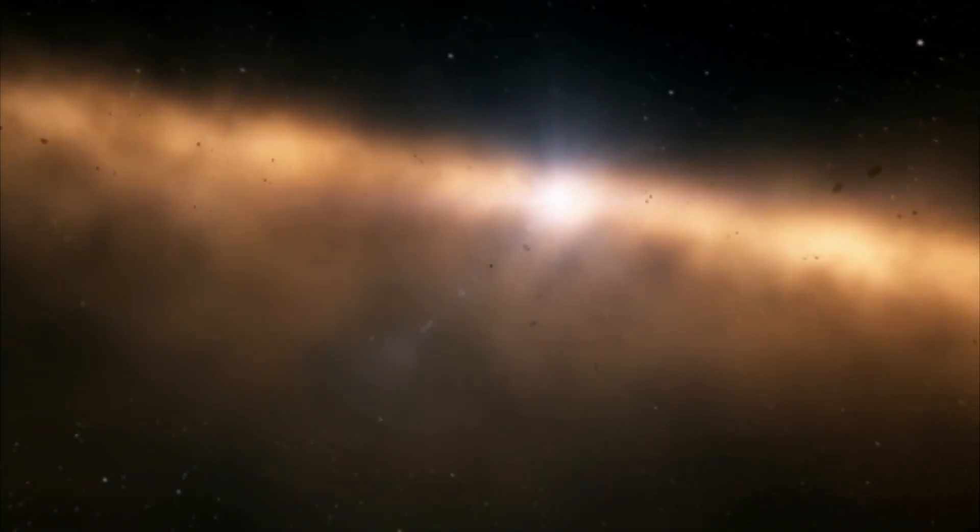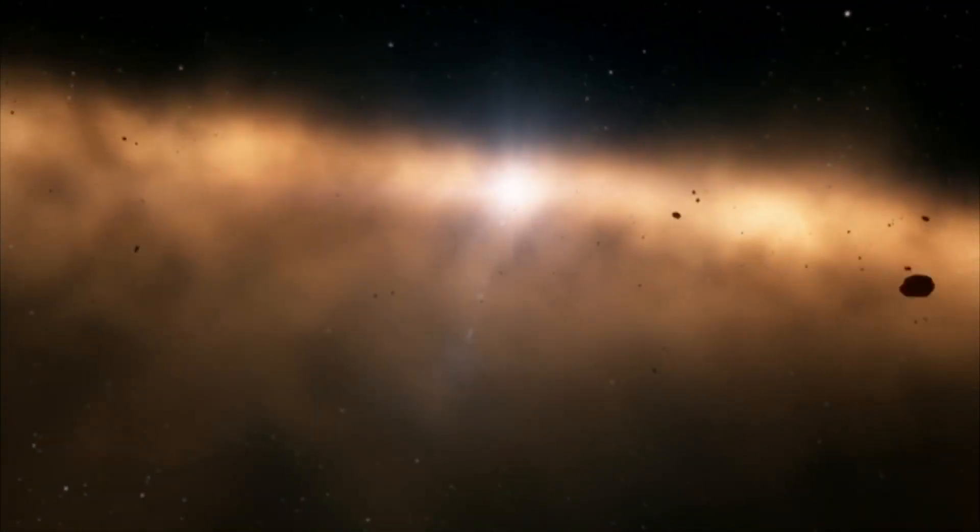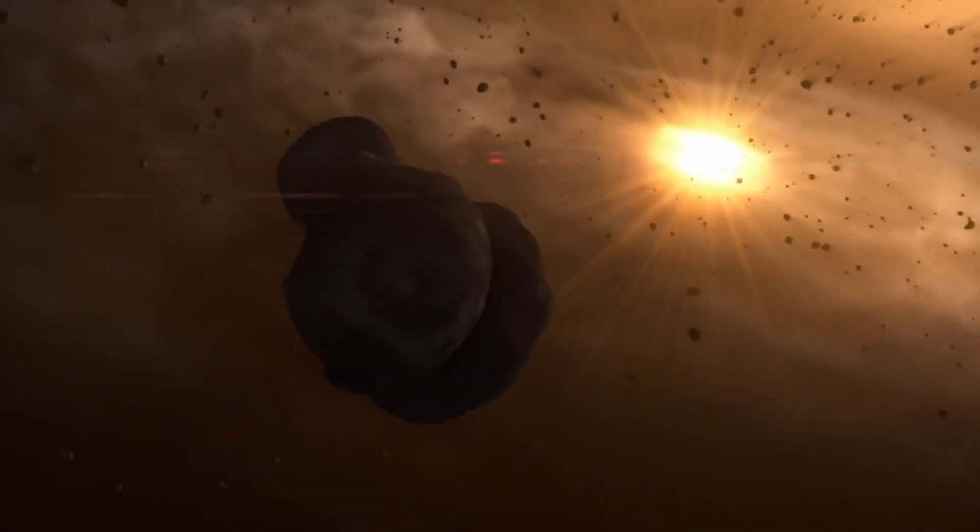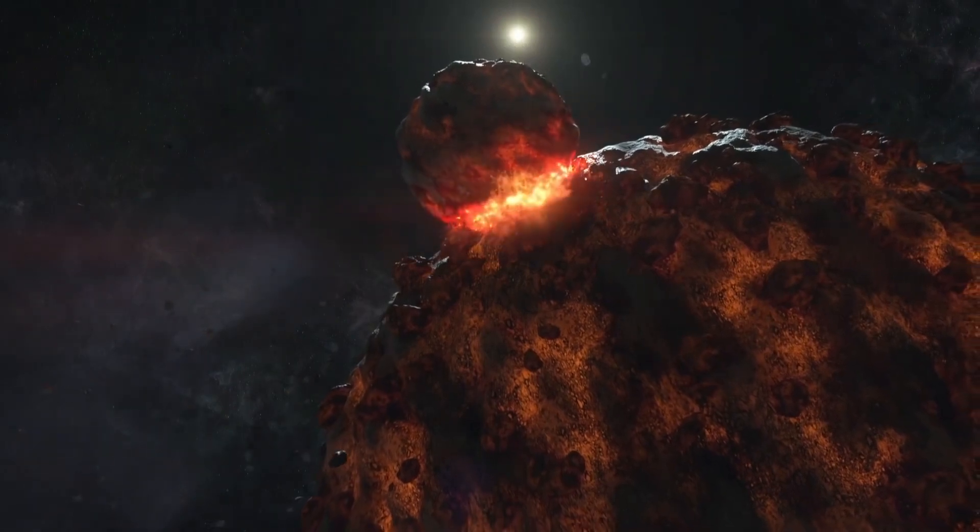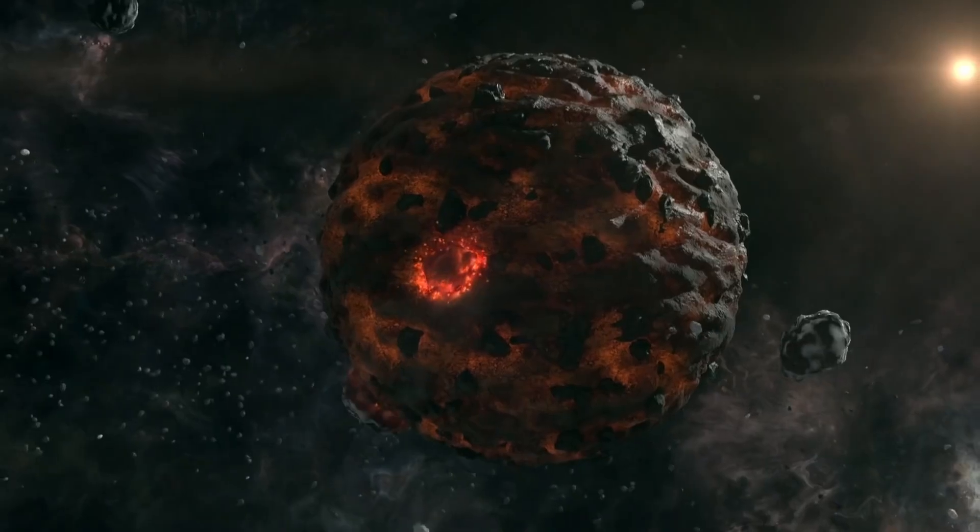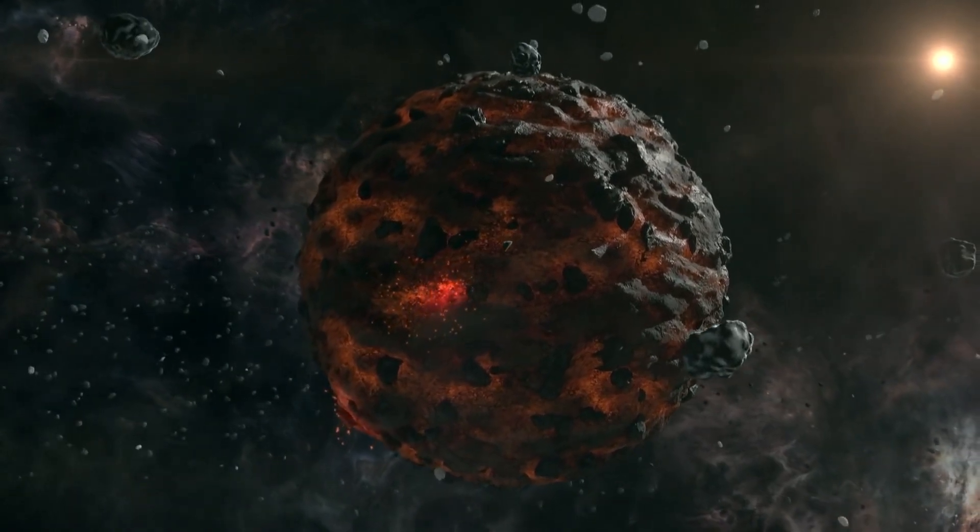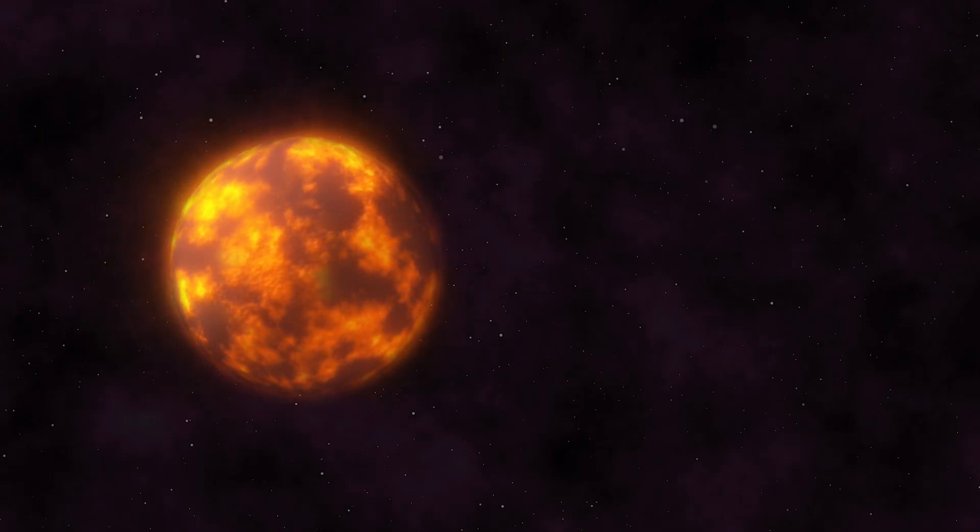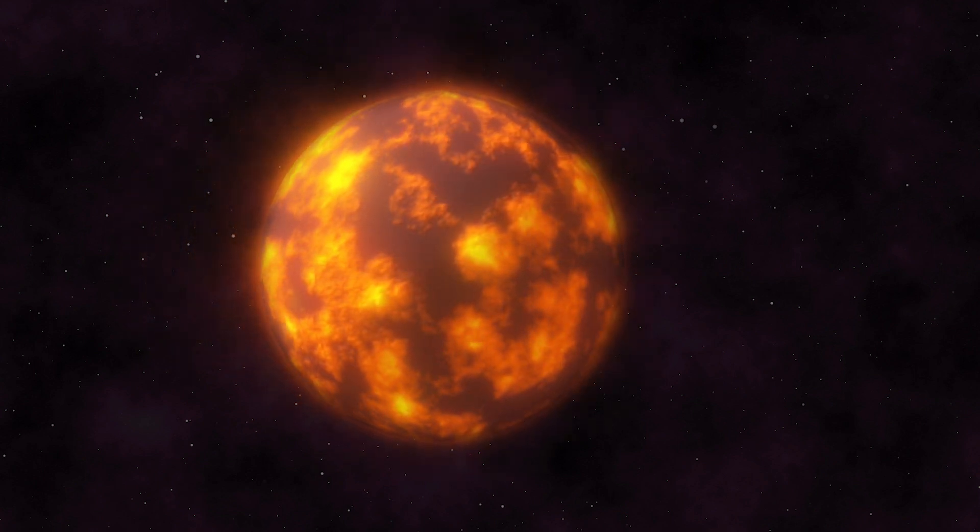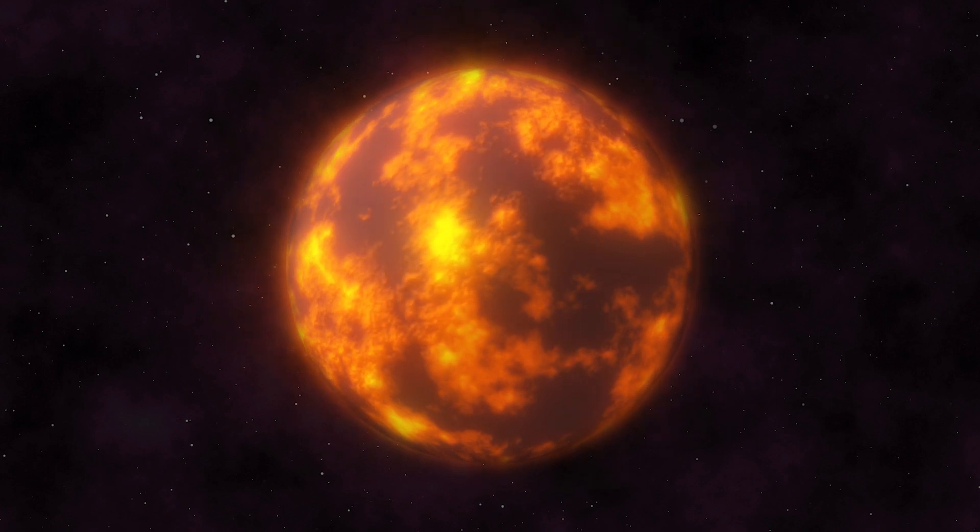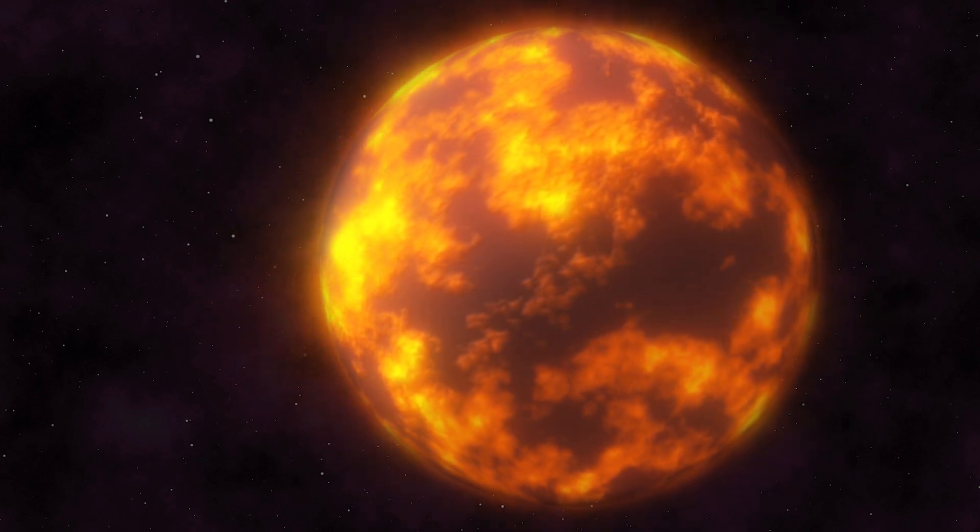As this body grows, it increasingly attracts material from the protoplanetary disk. The fall of this material onto the surface of the planetesimal leads to the release of gravitational energy in the form of heat. The planetesimal gradually heats up until finally, under the influence of the heat released, its interior begins to melt. During this process, heavier elements such as iron sink into the molten mass, forming a massive core, while lighter elements remain on the surface. This process is called gravitational differentiation, and its initiation marks the transformation of a planetesimal into a protoplanet.